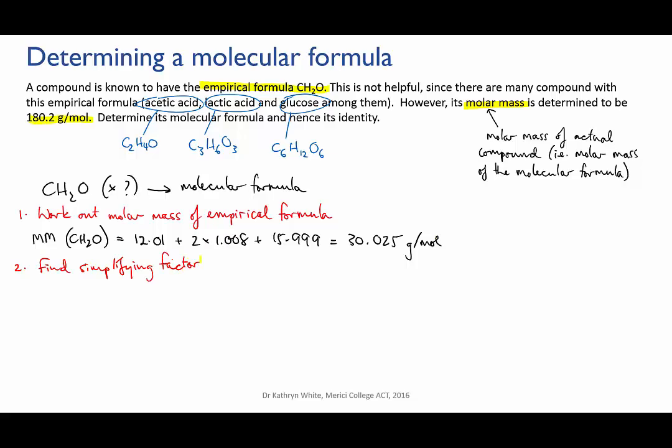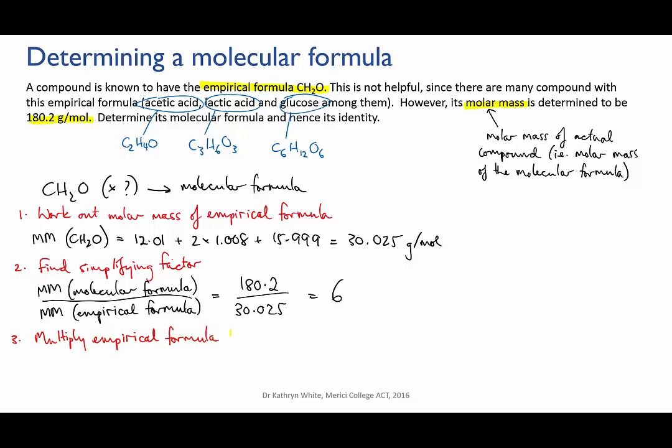Now, we'll take the true molar mass, 180.2, and divide it by the molar mass of the empirical formula, and this equals 6. That means that the molecular or true formula was divided through by 6 to give the empirical formula. So we reverse that process and we get that the true formula is C6H12O6, which is the formula for glucose.